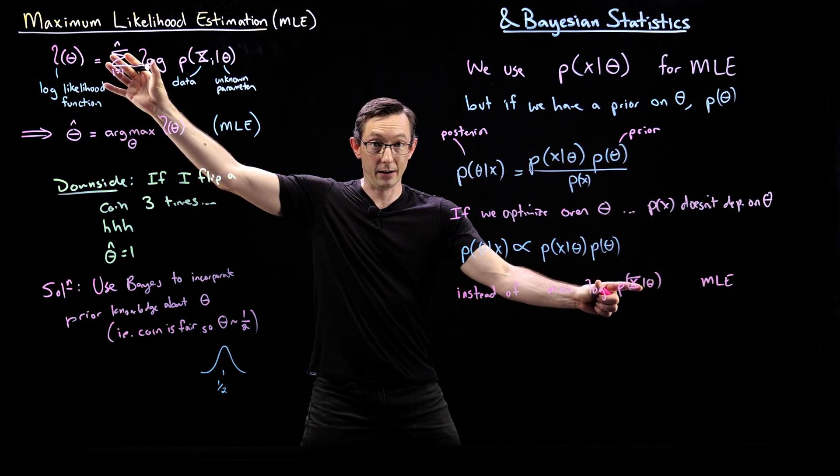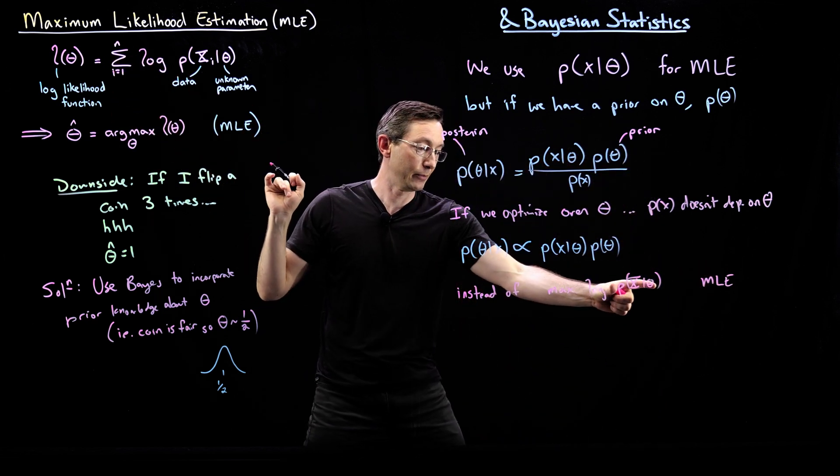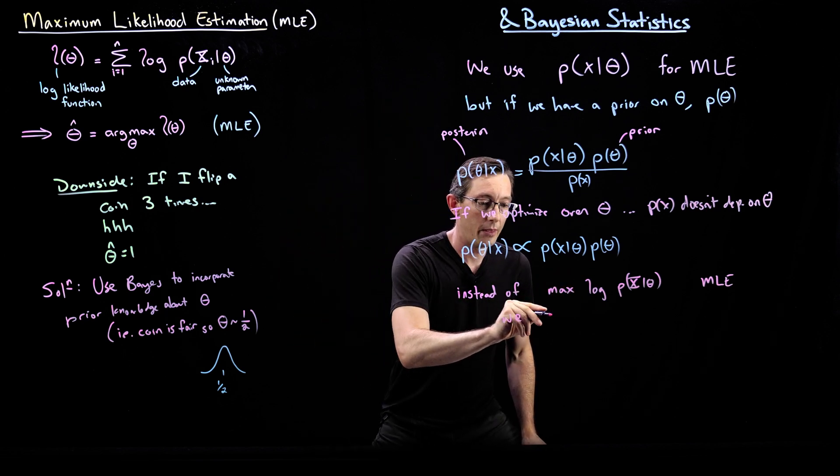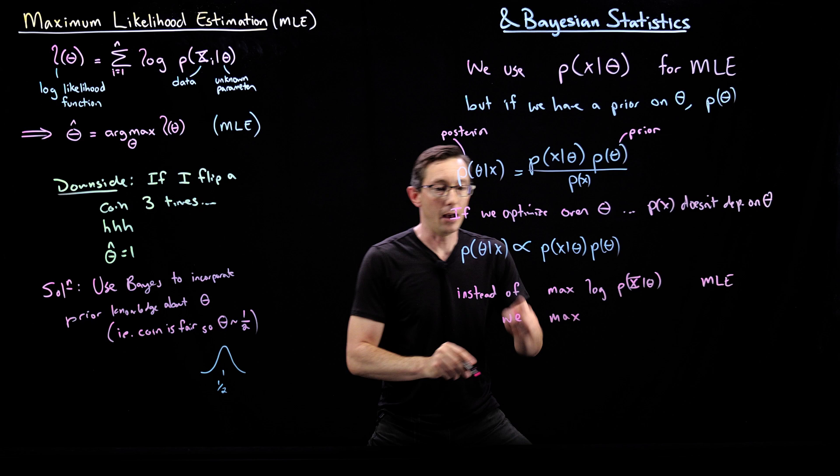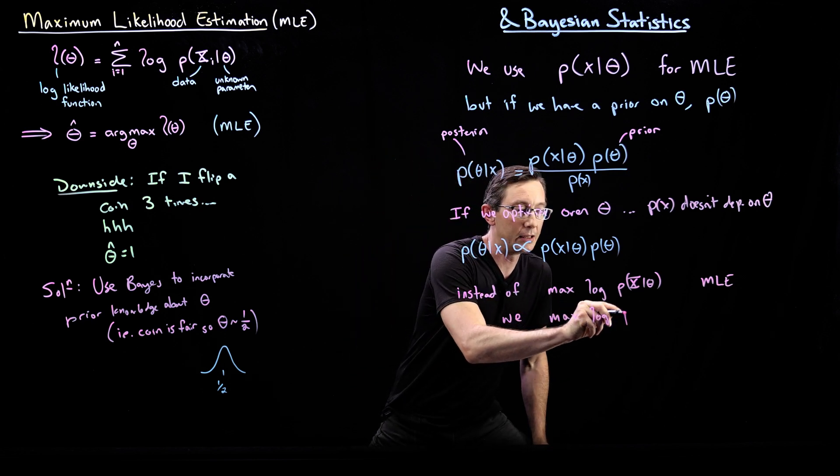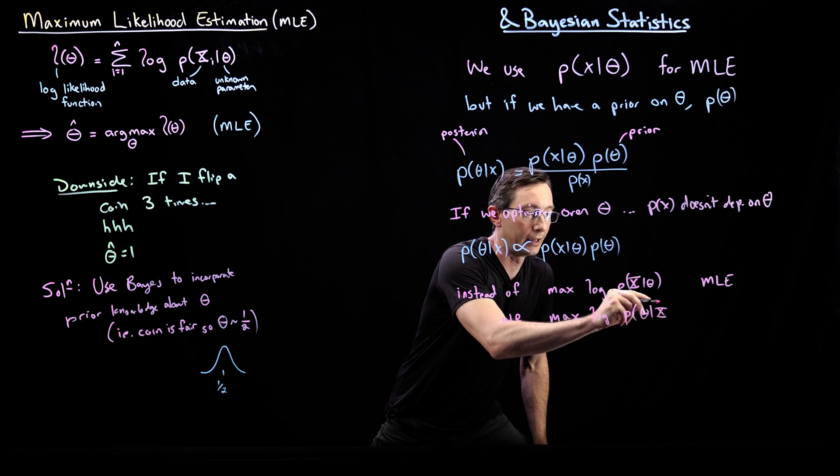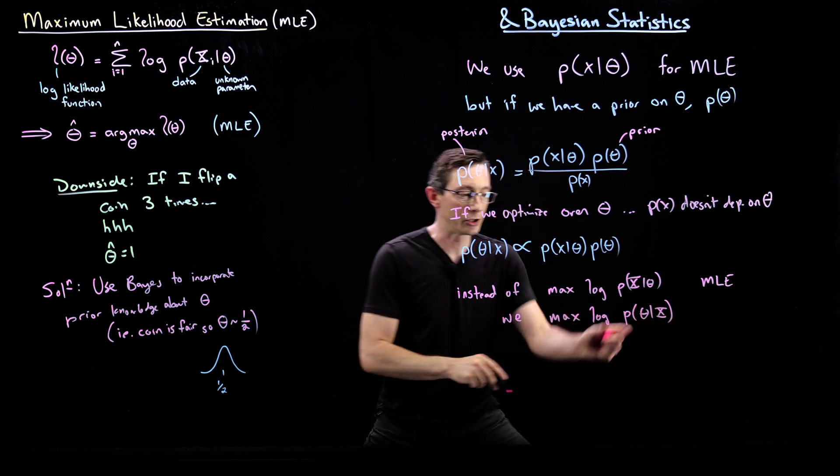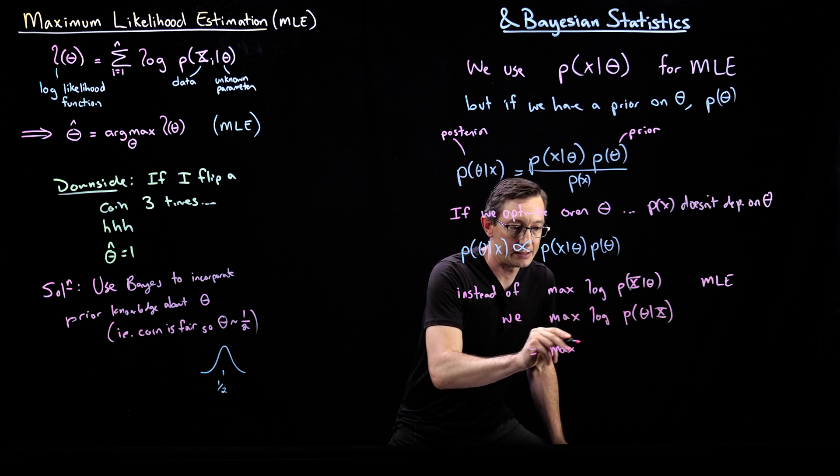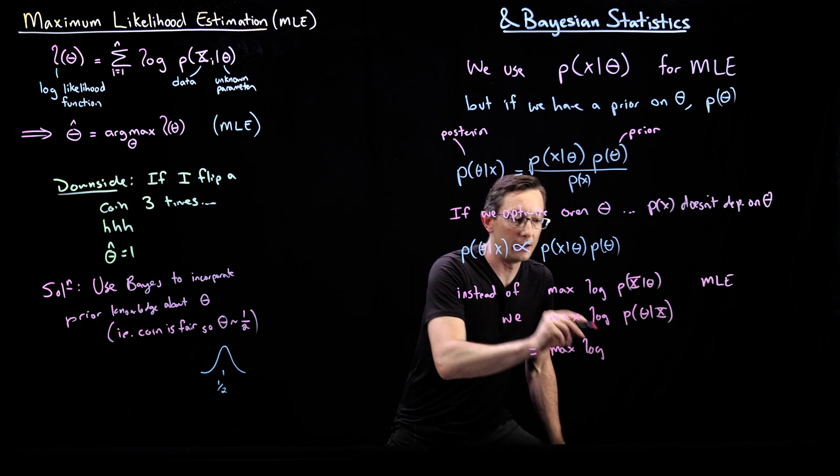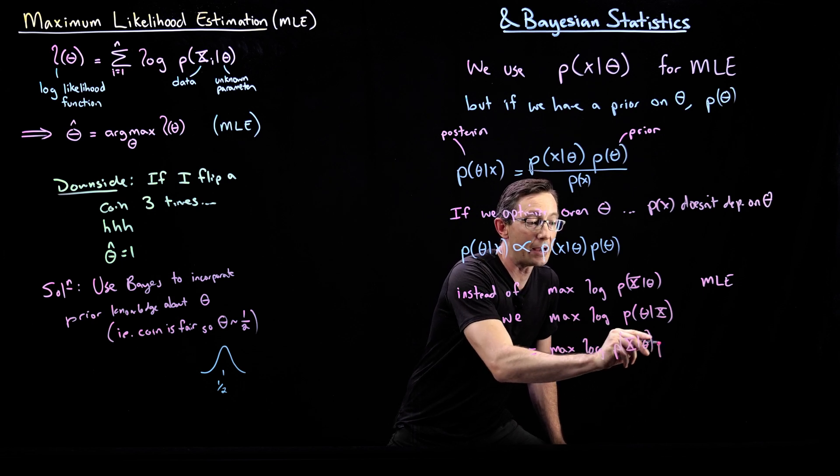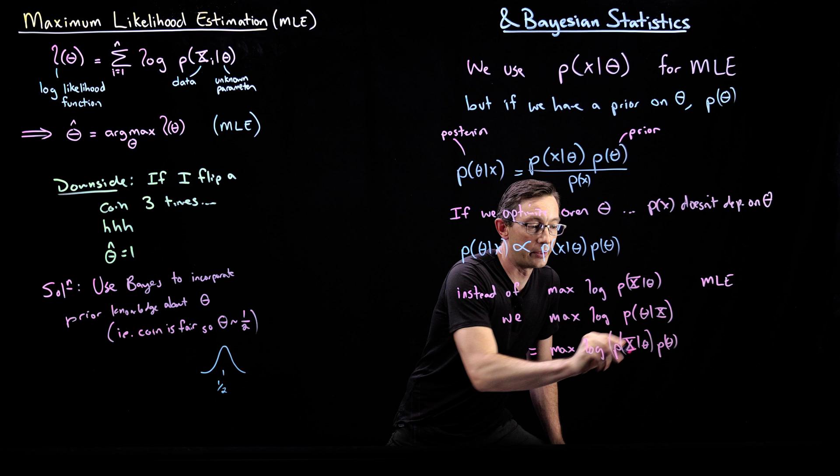This is the classic maximum likelihood estimate. Instead of doing that, we compute the max of the log of this quantity, of the log of P(θ|x). Which is essentially, I can plug in this expression into here. This equals max log of P(data|parameters) times my prior distribution on the parameters.